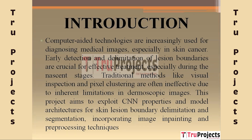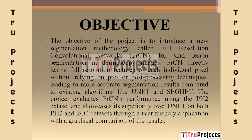This project aims to exploit CNN properties and model architectures for skin lesion boundary delimitation and segmentation, incorporating image inpainting and pre-processing techniques. The project introduces Full Resolution Convolutional Networks (FRCN) for segmenting skin lesions in dermoscopy images. In contrast to existing algorithms like UNet, FRCN learns full resolution features of individual pixels without the use of pre- or post-processing methods. The project assesses FRCN's performance using the PH2 dataset and demonstrates its superiority over UNet on both the PH2 and ISIC datasets.